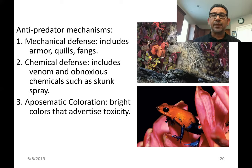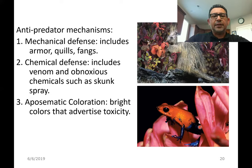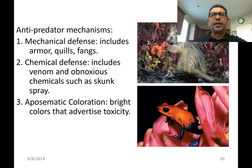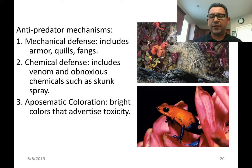Aposematic coloration can be seen in amphibians like poison dart frogs, and insects use this type of coloration as well. A number of other animals use it too — for example, certain rockfish and scorpionfish rely on bright colors. If their disguise is not effective and they get detected, they can use bright colors to discourage an attacker.